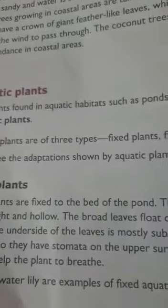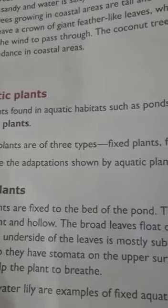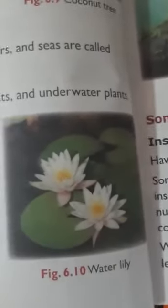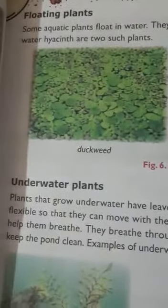Fixed plants have light and hollow stems. Their broad leaves float on the water, and the underside of the leaves is mostly submerged. They have stomata on the upper surface of their leaves, so they breathe through these stomata. Lotus and water lily are examples of fixed aquatic plants.